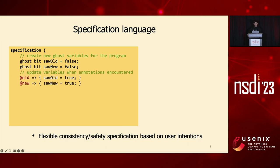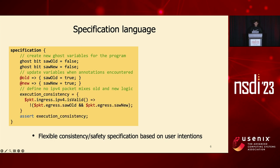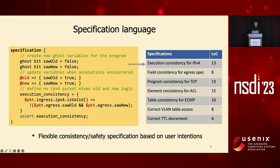With these ghost variables, we can define assertions at runtime. For example, we can assert that no P4 packet should mix old and new logic. We define that for any packet, if its P4 ingress then egress, the values of so-old and so-new cannot be true at the same time — otherwise it means there is a mixture of old and new logic on its execution path. This is what we refer to as execution consistency for IPv4. Similarly, you can define many other types of consistency or safety specifications, typically within several lines of code in our tool.